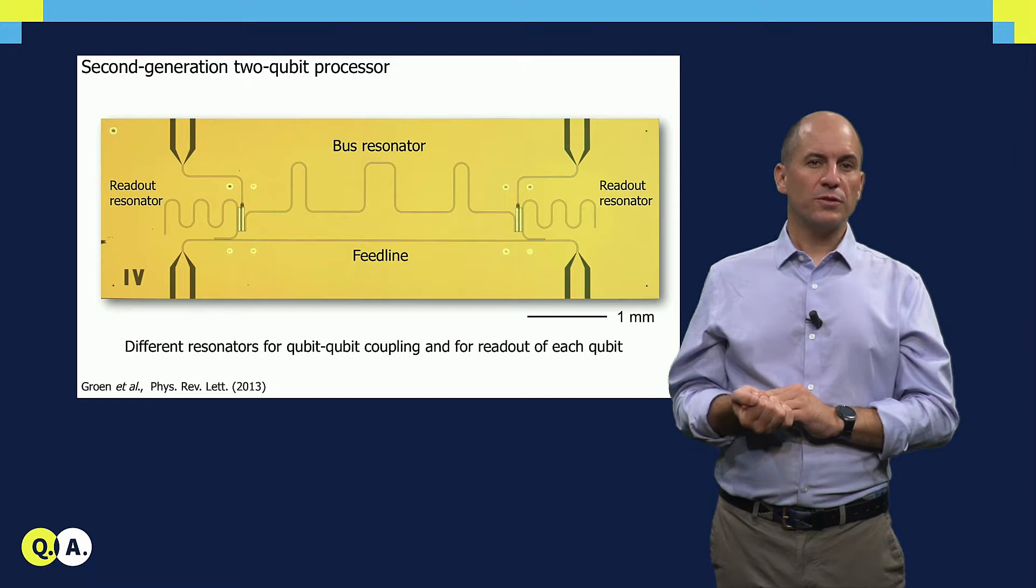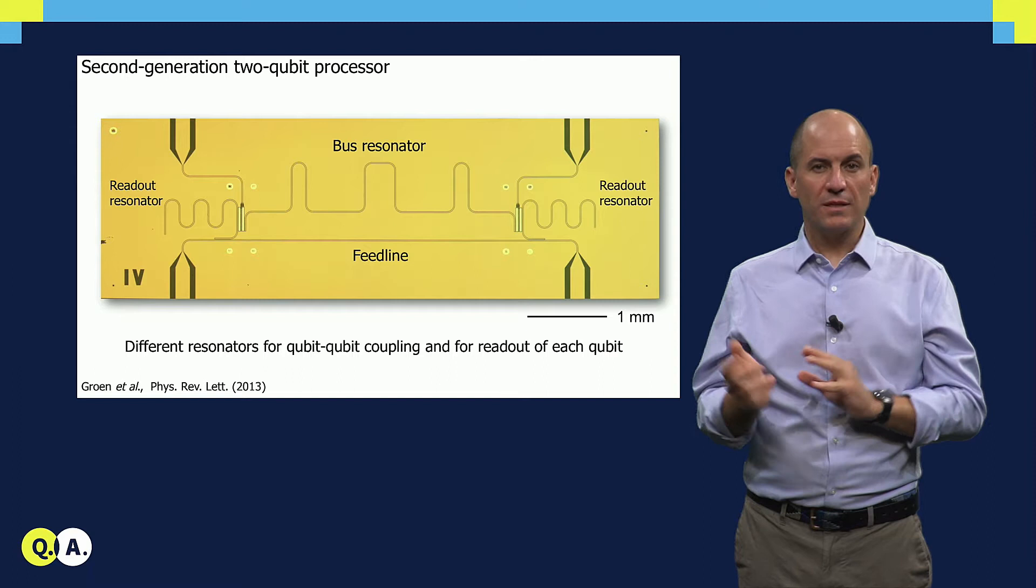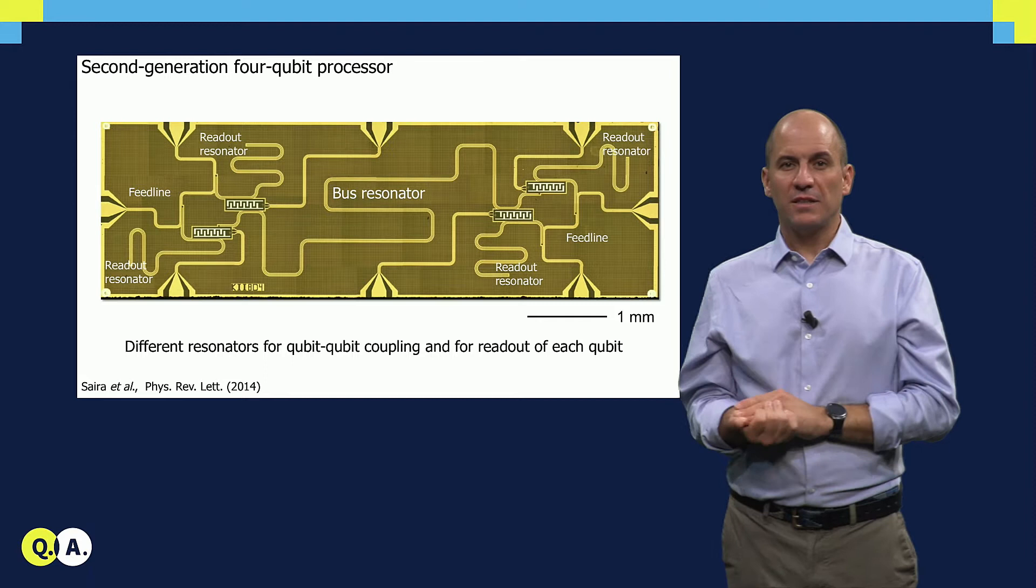Here's an example two-qubit processor from 2013. Note the common lambda over 2 bus resonator in the middle and the lambda over 4 readout resonators, one per qubit, coupled to the common feed line.